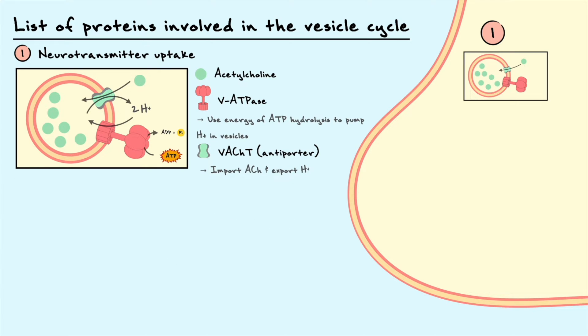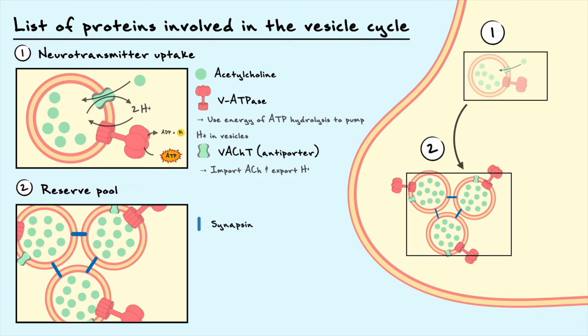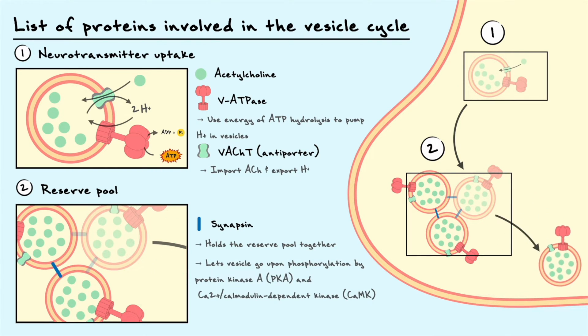The filled vesicles are then moved into a reserve pool just outside the active zone. A protein named synapsin holds the reserve pool stable by cross-linking the vesicles together. Synapsins are substrates of two kinases, protein kinase A and calcium-calmodulin-dependent protein kinase. Upon phosphorylation by the kinases, the synapsins are released from the vesicles and allow the vesicles to enter the next step.